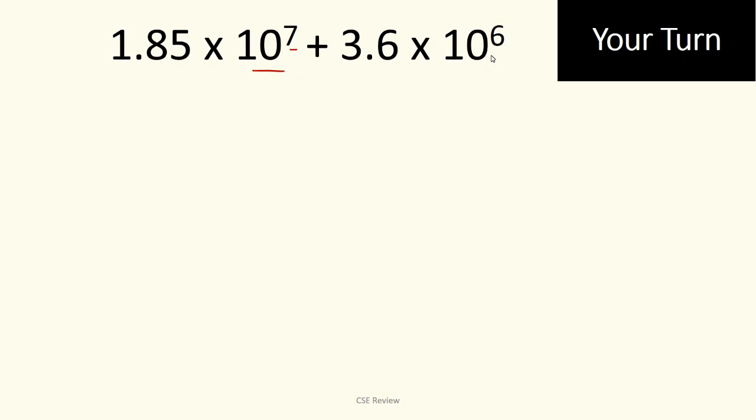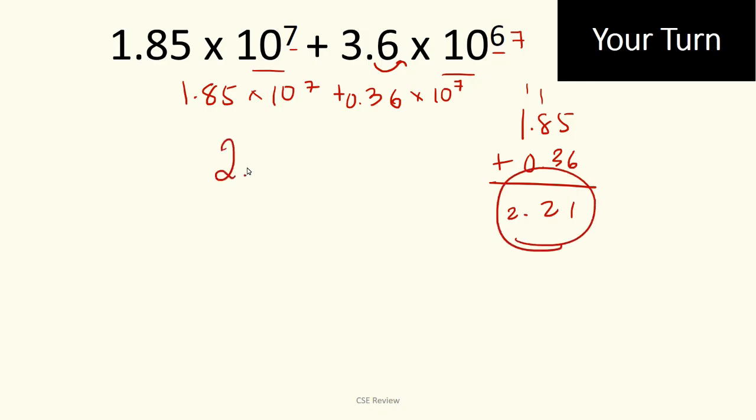Now, magkaiba sila. This is 10 raised to 7, this is 10 raised to 6. So, again, we'll make them the same. Another option would be to move this one place para maging 10 to the seventh. So, magiging 1.85 times 10 to the seventh plus 0.36 times 10 to the seventh. So 1.85 plus 0.36, this is going to be 11, this is also 11. So 2.21. The answer is 2.21 times 10 to the seventh. And that is your final answer. So, I hope you got that right.